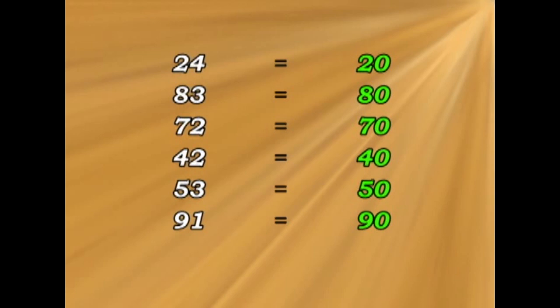If we add the rounded off numbers together, we get three hundred and fifty. If we add up the real numbers, we get three hundred and sixty-five.